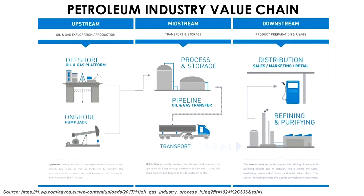Let us talk about the value chain or the supply chain of the petroleum industry — what process does hydrocarbon go through to get from the subsurface to the fuel stations or petrol pumps? The first part is called the upstream petroleum industry, where we actually locate and explore for hydrocarbon, and once we find it, we put up infrastructure and drill wells to take it out from the subsurface.